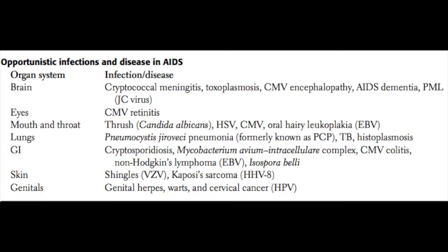There are various opportunistic infections associated with AIDS, which we look for both clinically and on the boards. Organizing by organ system: in the brain, we see cryptococcal meningitis, toxoplasmosis, CMV encephalopathy, AIDS dementia, and PML caused by the JC virus — which indicates falling CD4 levels and the onset of AIDS.